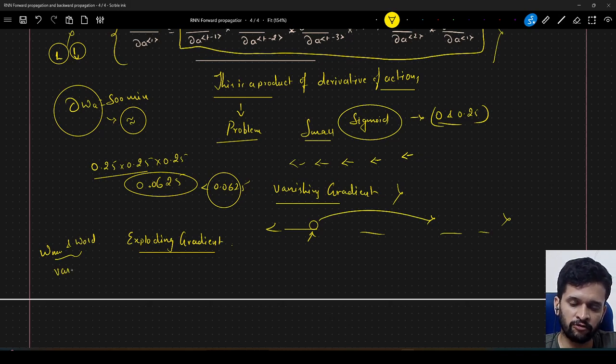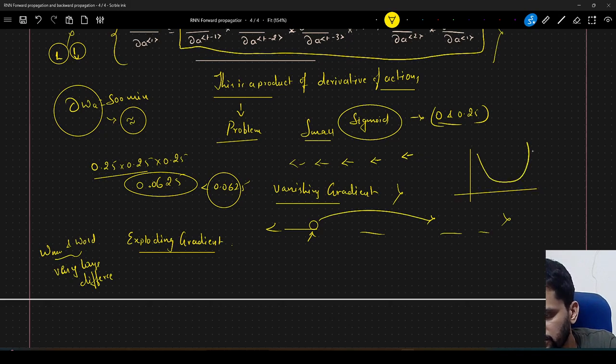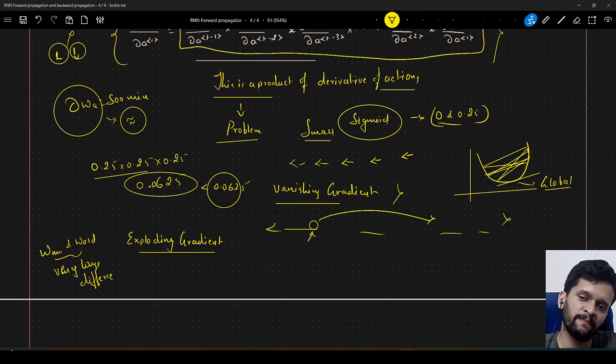We end up updating the weights so that our new and old weight will vary very largely. So there will be very large difference between new and old weights. So what happens if we just think of this as a cost function, we end up wandering here and there instead of converging to a global minimum here. So we will never arrive at global minimum, we will even diverge from our global minimum, okay.